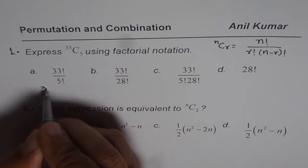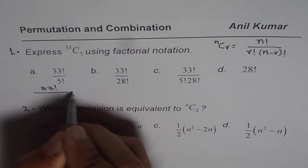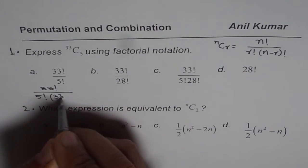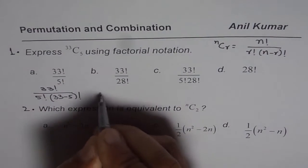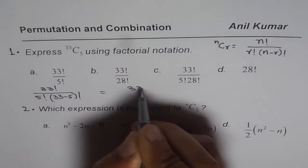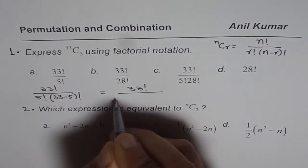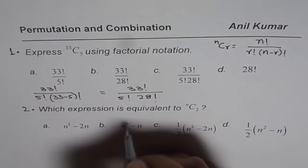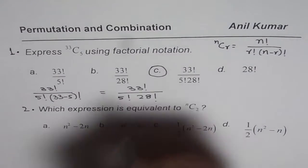So write it down as 33 factorial divided by 5 factorial times 33 minus 5 factorial. That gives you 33 factorial divided by 5 factorial times 28 factorial. And therefore the option is C.